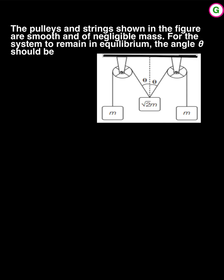In this diagram, root 2 m is in equilibrium. To find angle theta, the tension T is present on both sides. Resolving the components: T sine theta and T cosine theta appear on each side. The T value here will be mg, and here also the T value is mg.